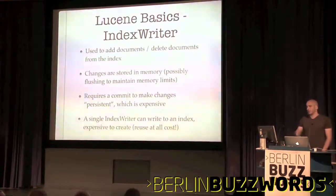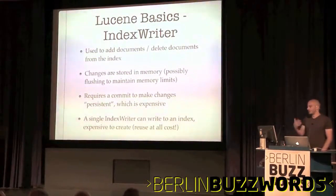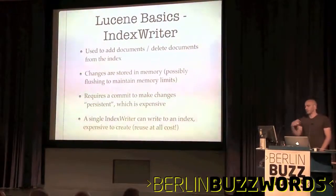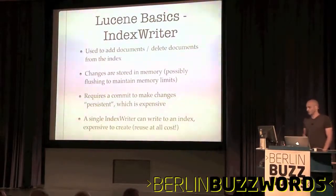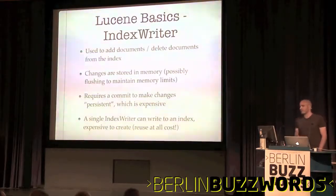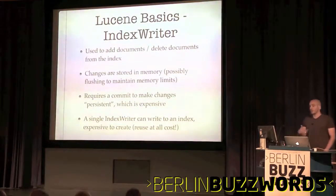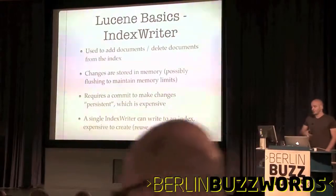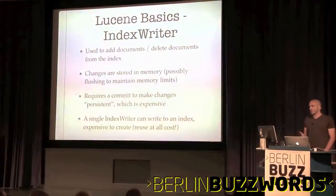Another important component in Lucene is the index writer. The index writer is the component you use to add, update, create, or delete documents in the index. As you do those operations, they are done in memory to improve indexing performance. They can be flushed to disk, but they require an explicit commit if you want to make sure all changes are really on disk. A commit can be expensive — it flushes files and does f-syncs on all the different files.